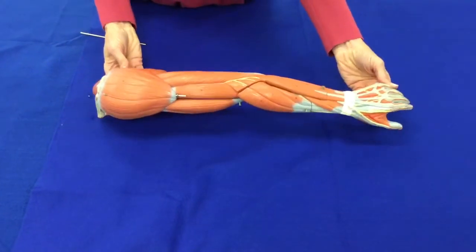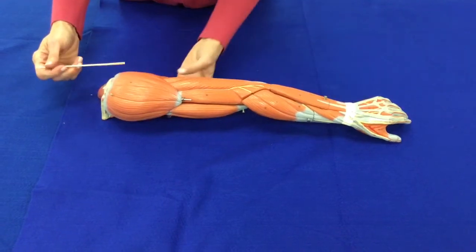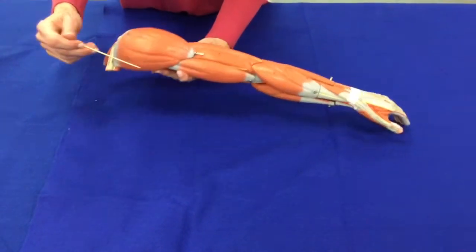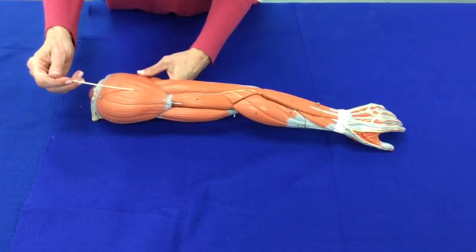All right now we are looking at the muscles of the arm. Let's start at the shoulder muscle. This shoulder muscle is called the deltoid muscle and it abducts the arm at the shoulder.